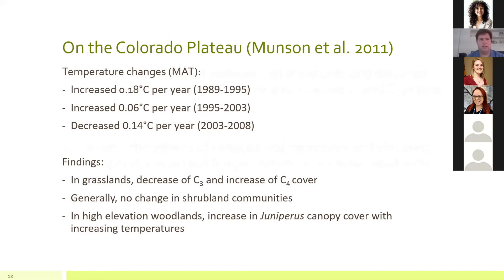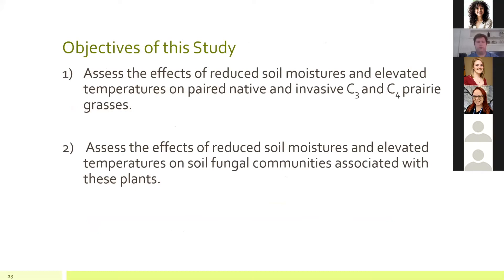In my study, I assessed the effects of reduced soil moistures and elevated temperatures on paired native and invasive C3 and C4 prairie grasses. Invasive species have gained a lot of attention over the last two decades in the context of climate change, because they often possess physiological adaptations that make them better suited to drought and abrupt changes, making them competitively superior to native species. The second objective was to assess effects of reduced soil moistures and elevated temperatures on the soil fungal communities associated with these plants.